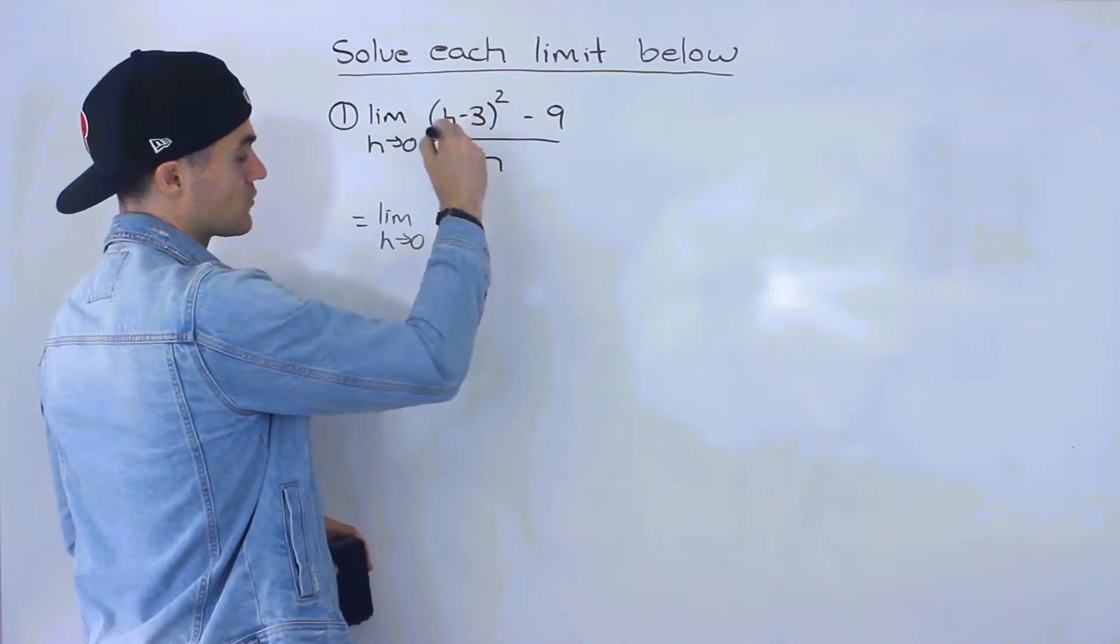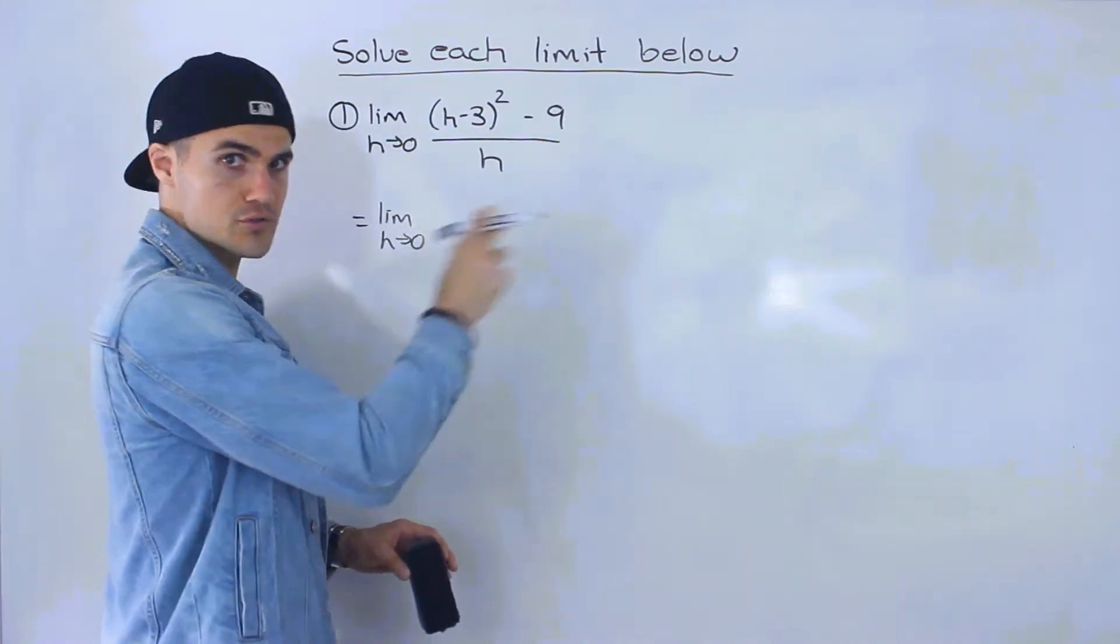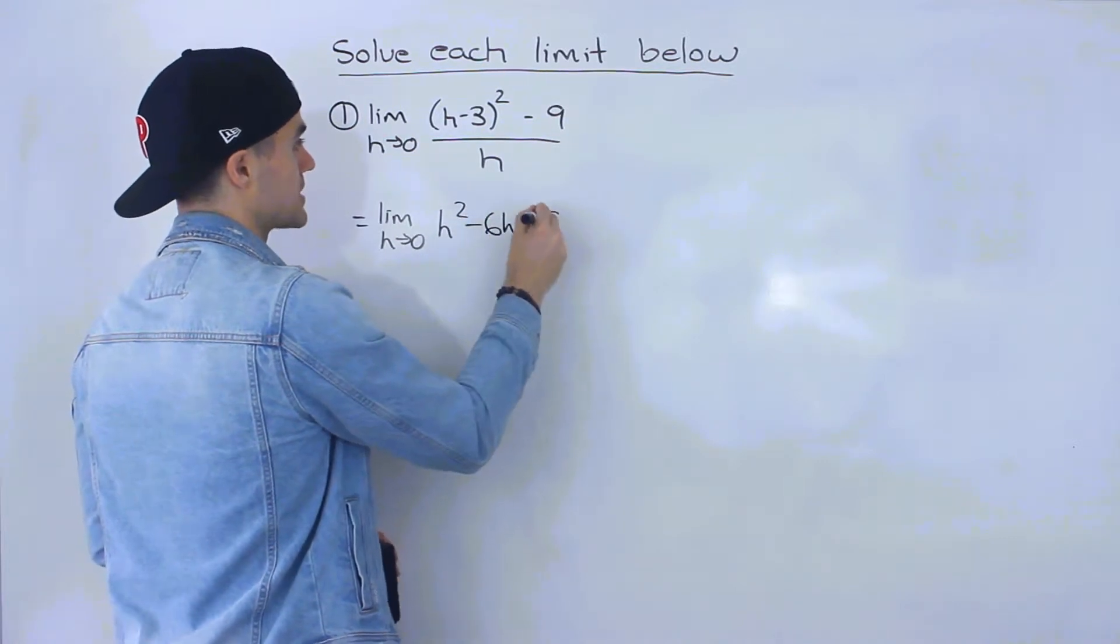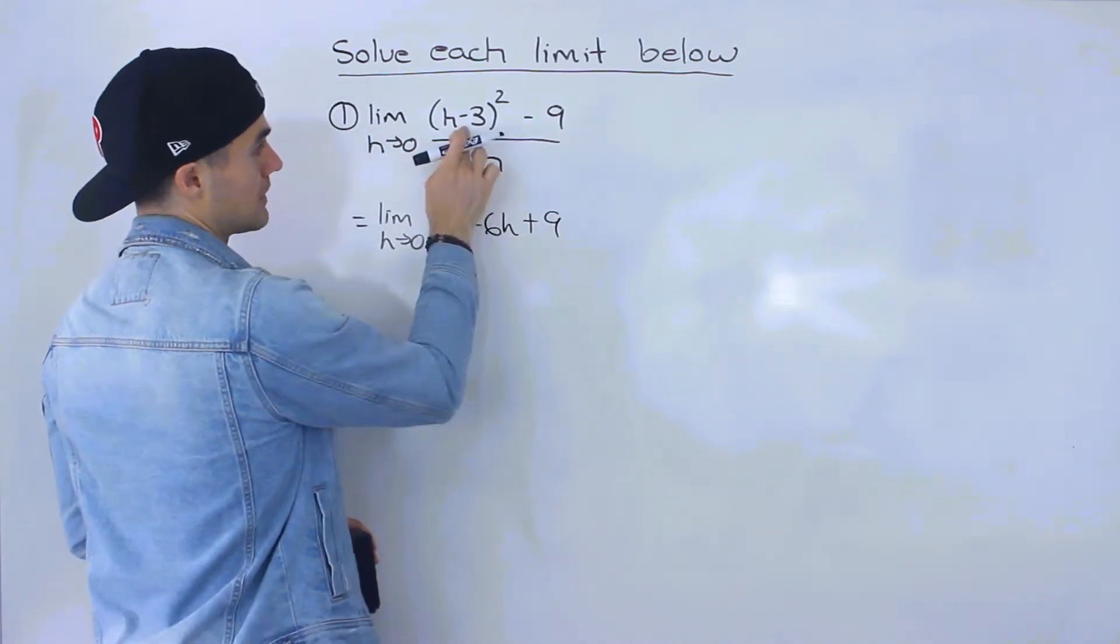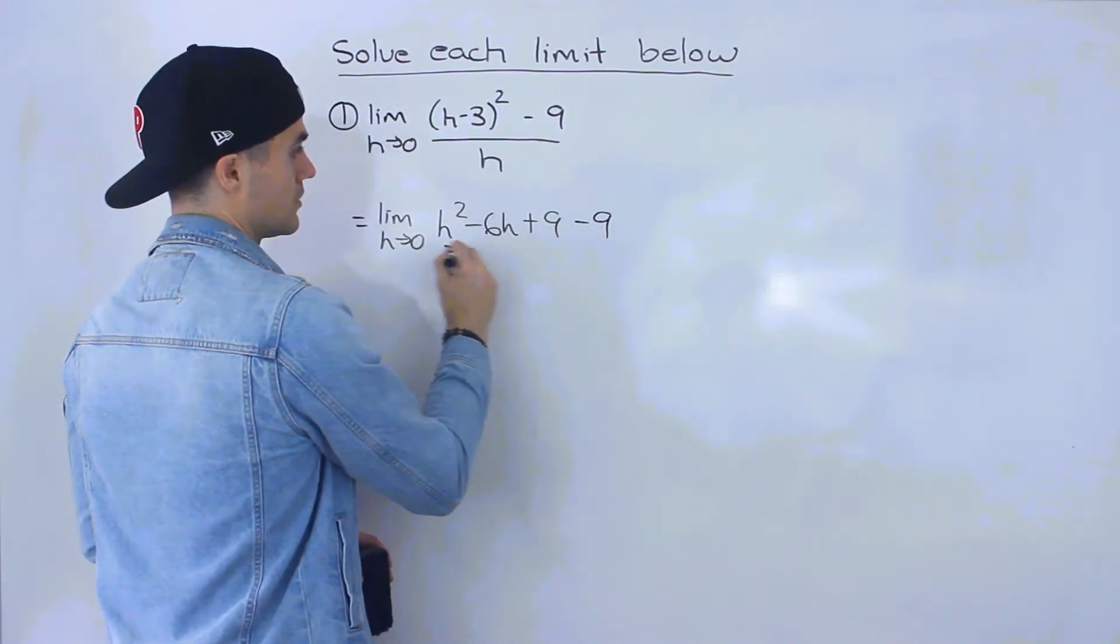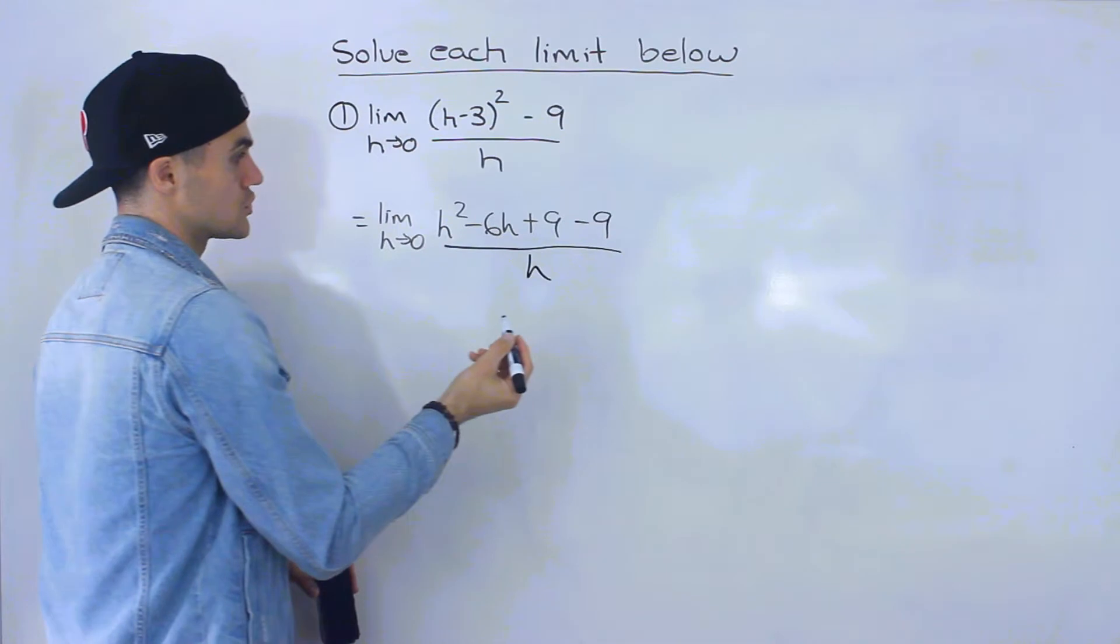So h minus three to the power of two if you foil those two brackets out you'd end up with h squared minus six h plus nine. That would be h minus three to the power of two all of this and then we got this minus nine still in the numerator and this is going to be all over h.